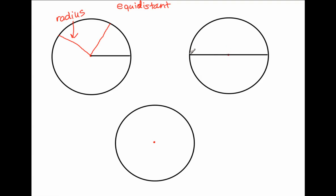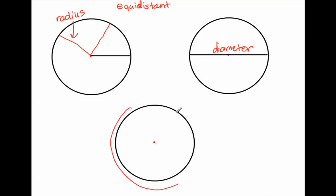Looking at this circle part right here, this is a line segment that connects two points on the circle and passes through the center — that will be called the diameter. And finally, one last circle part is the distance around the circle, and the distance around the circle will be called the circumference.